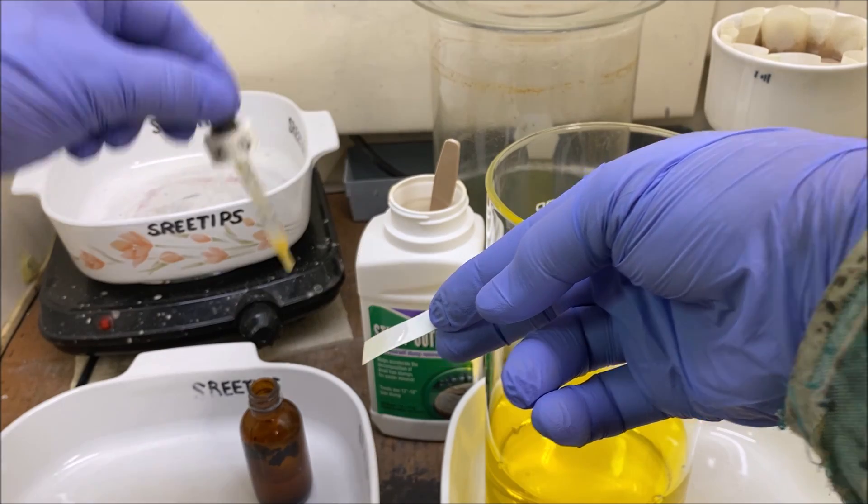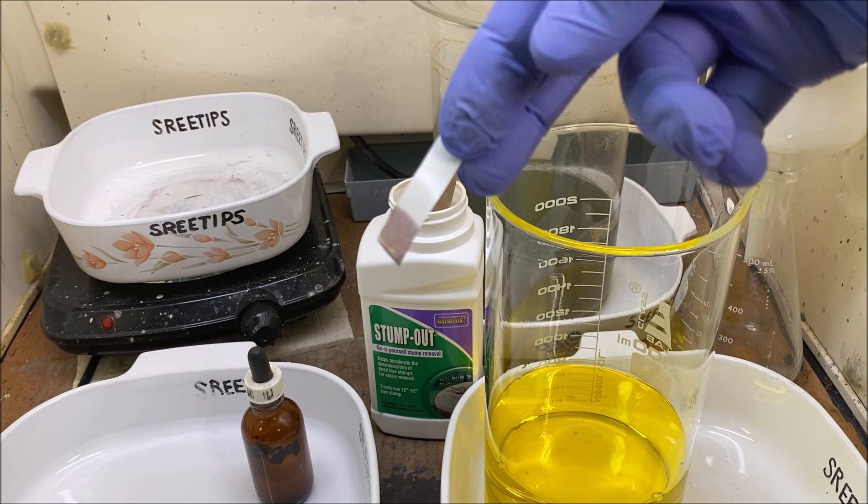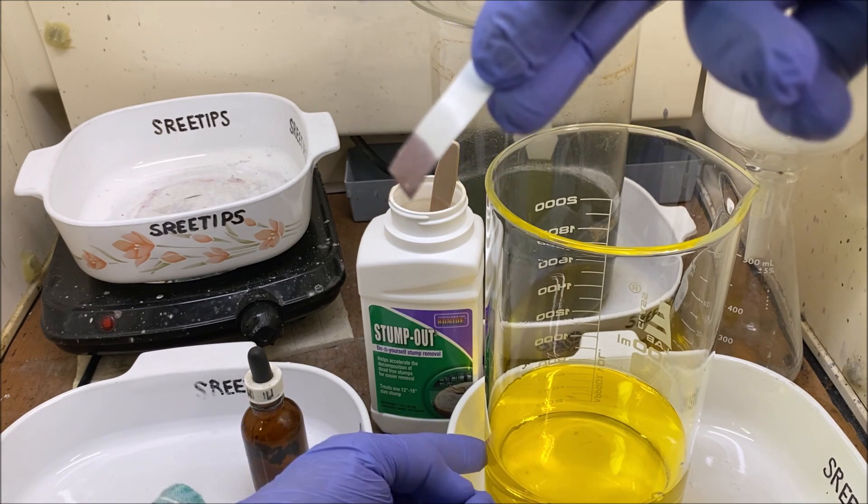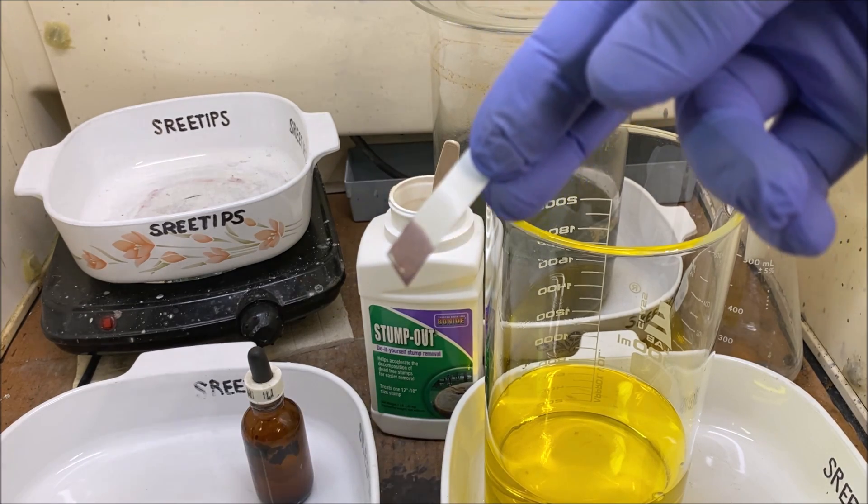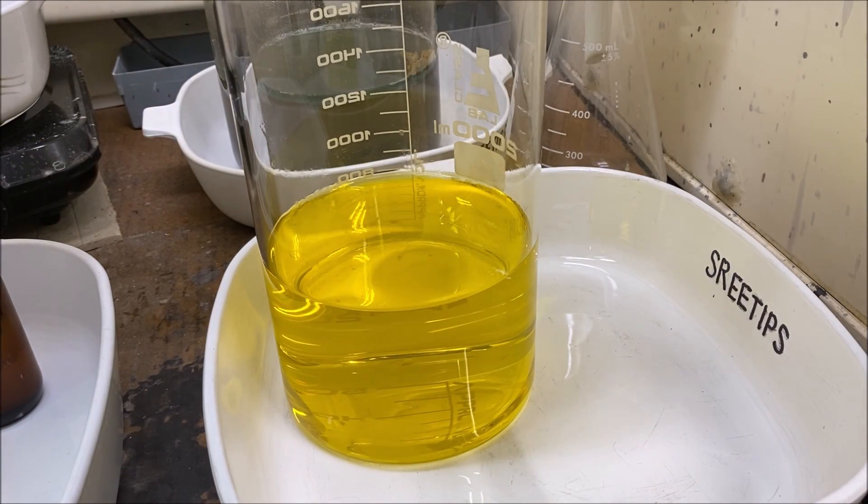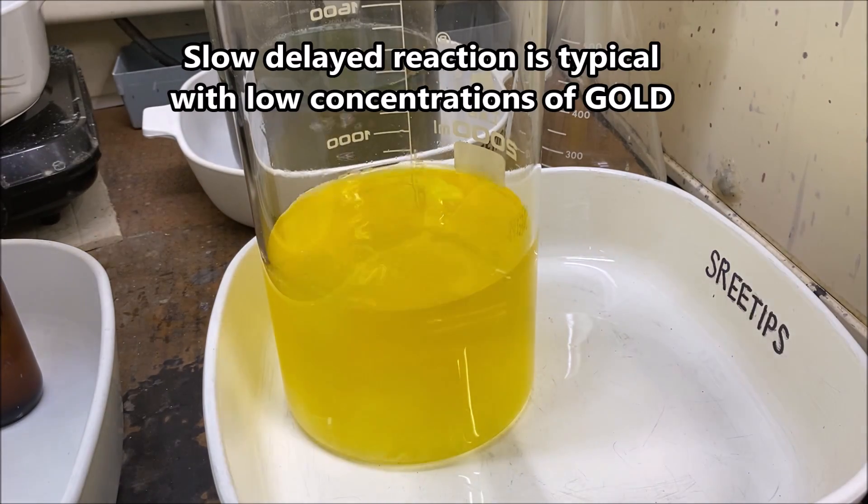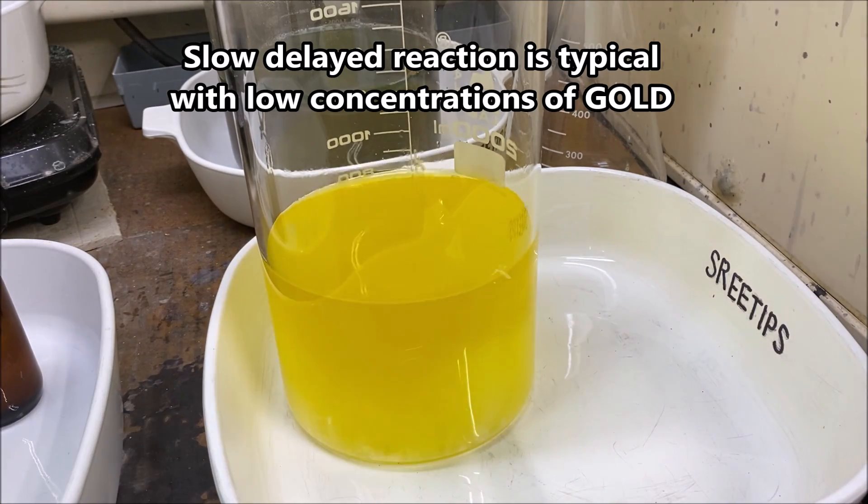Before we try to precipitate it out, that stain tells me I've got gold, maybe a couple grams in this solution. Now we're going to add some stump out which is sodium metabisulfite to precipitate out our pure gold. That should be enough, three spoons should do it.